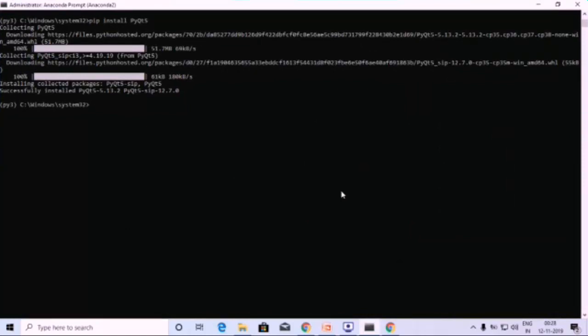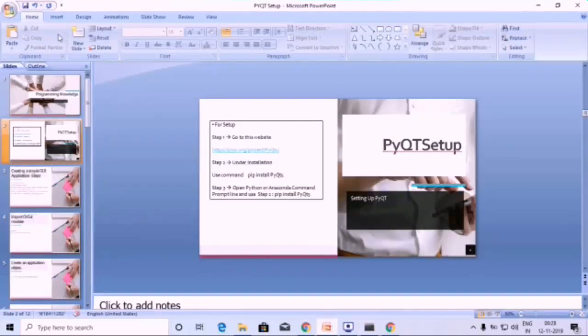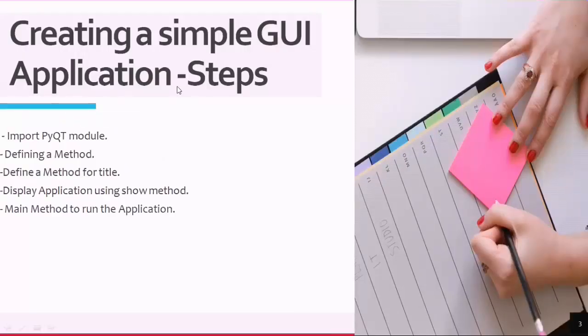We have now installed the PyQt5 library. Let's go and look at the sample code for creating a sample application. We are going to discuss the steps for creating a simple GUI application — there are five steps involved.